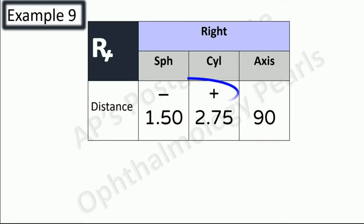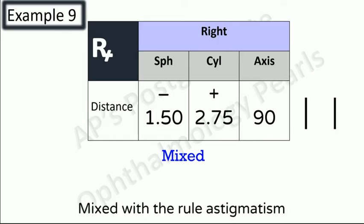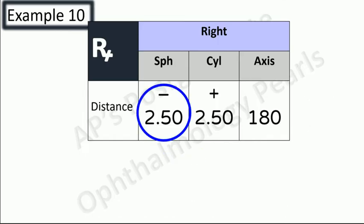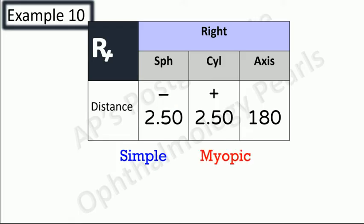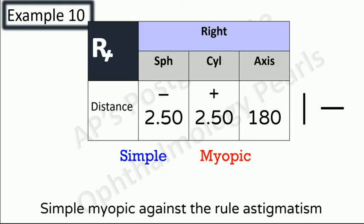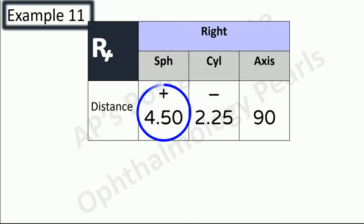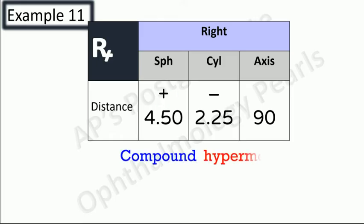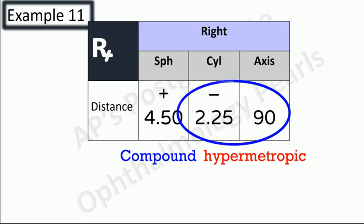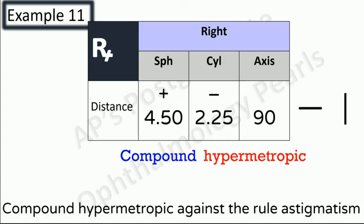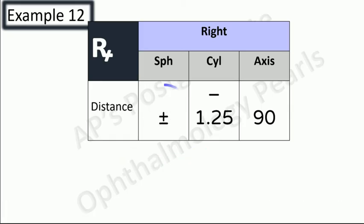Example nine: sphere is present, signs are different, sphere is minimal so simple; sign of sphere is minus so myopic; both lines in opposite directions so against-the-rule — simple myopic against-the-rule astigmatism. Example ten: signs are opposite, sphere is greater so compound; sign of sphere is plus so hypermetropic; both lines in opposite directions so against-the-rule — compound hypermetropic against-the-rule astigmatism.